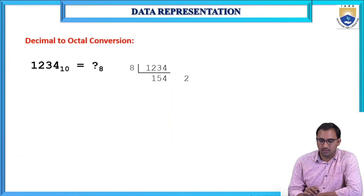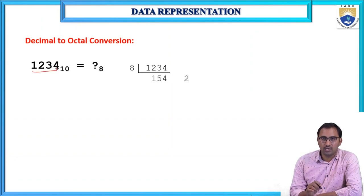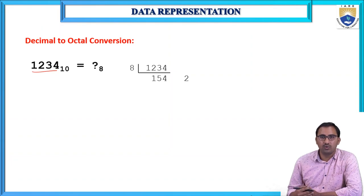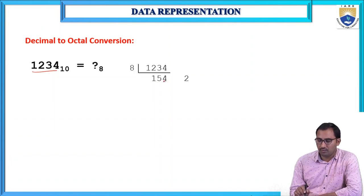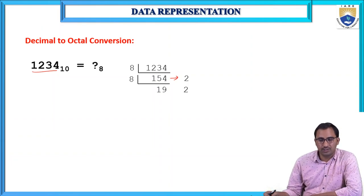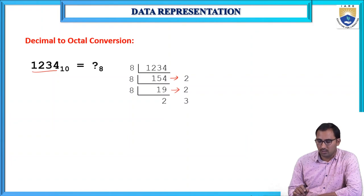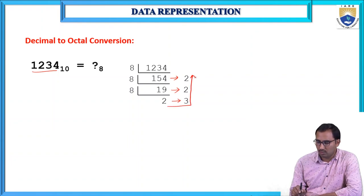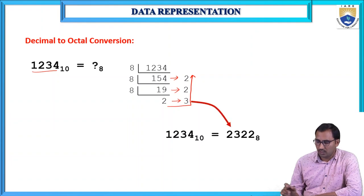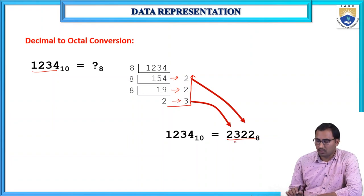For decimal to octal conversion, we divide the number by 8. For example, dividing 154 by 8: 154÷8 = 19 remainder 2; 19÷8 = 2 remainder 3; 2÷8 = 0 remainder 2. Reading the remainders from bottom to top gives the equivalent octal number 232.